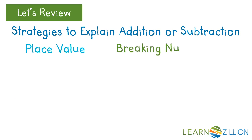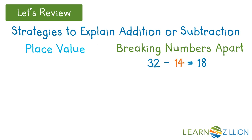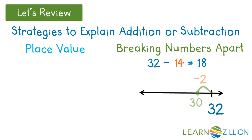You can also break the numbers apart in a different way. To subtract 32 minus 14, you can break the 14 up into 2, 10, and 2 and subtract each part.